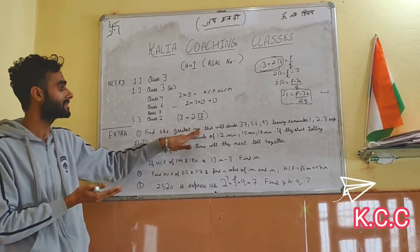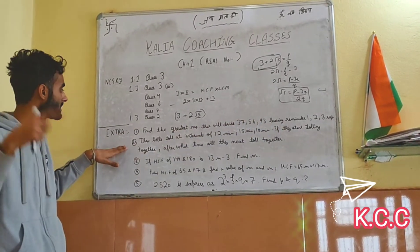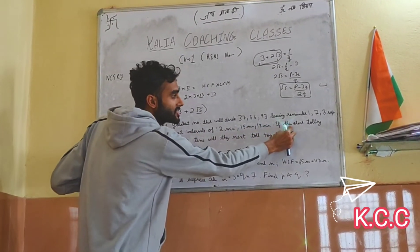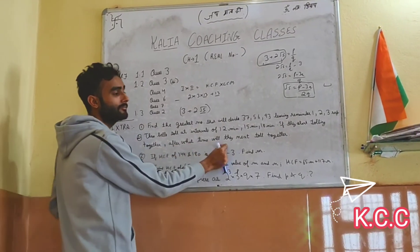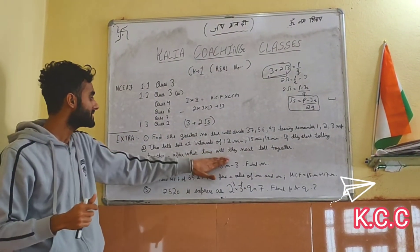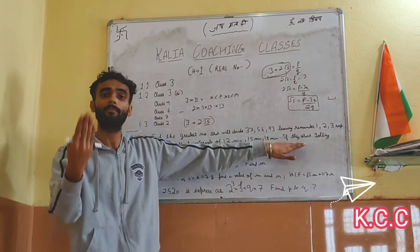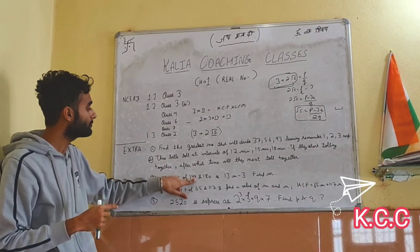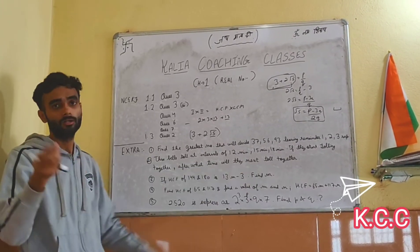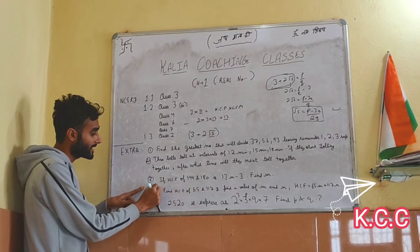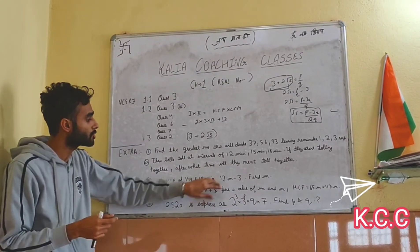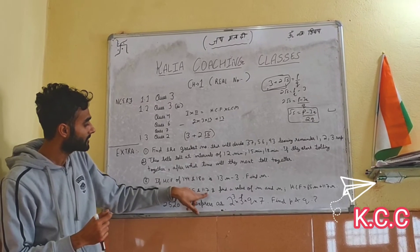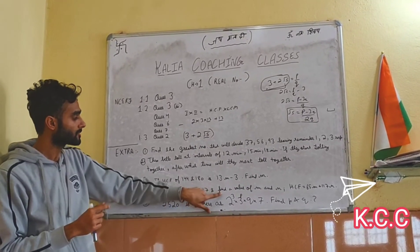Find the greatest number — that means HCF. If it is not clear, we will explain in the format section. Three bells score at intervals of 12 minutes, 15 minutes, and 18 minutes. If they start ringing together, after what time will they next ring together? That means we need LCM. If HCF of 144 and 180 is given, find HCF of 149.